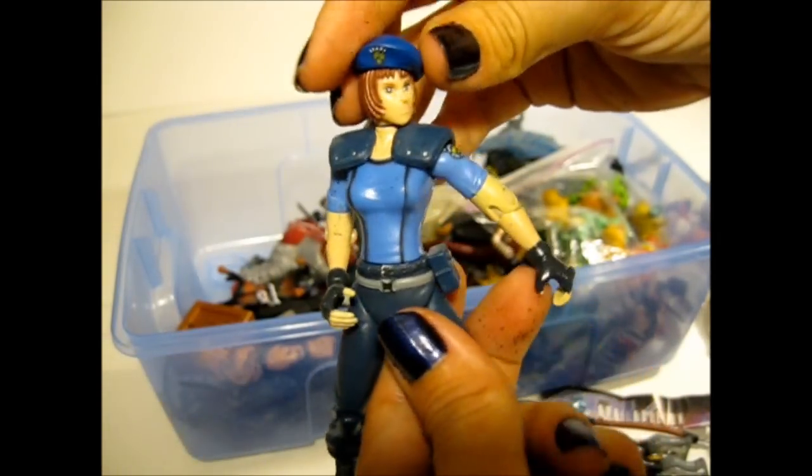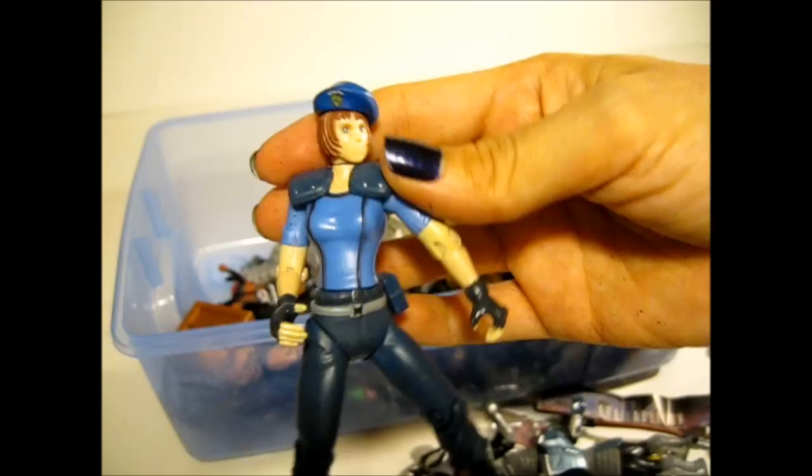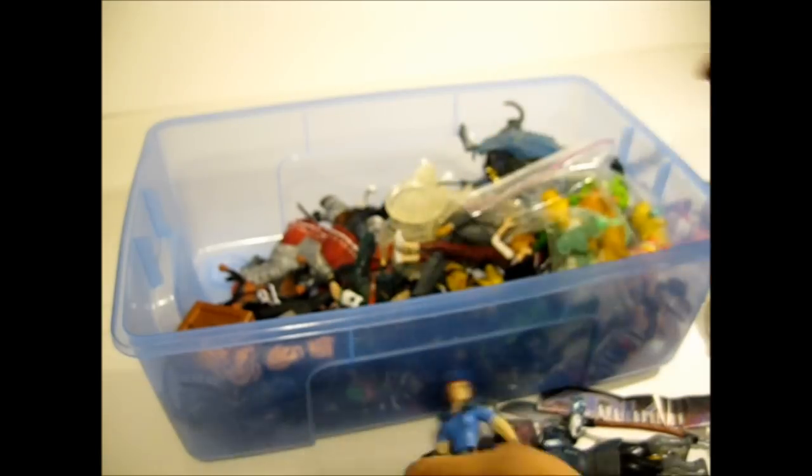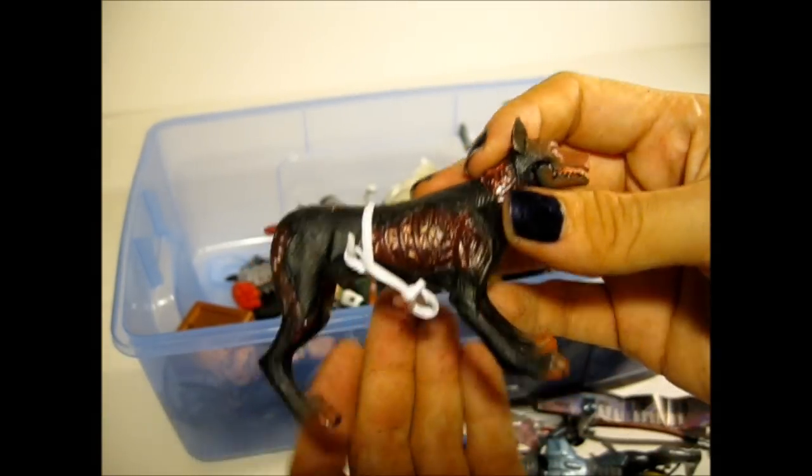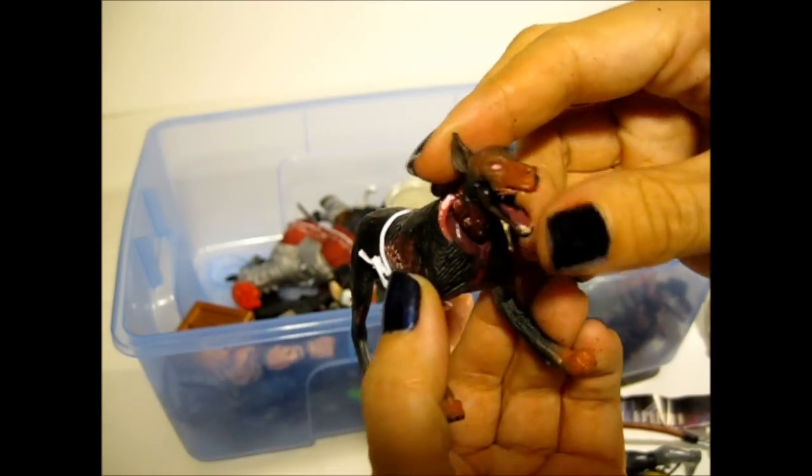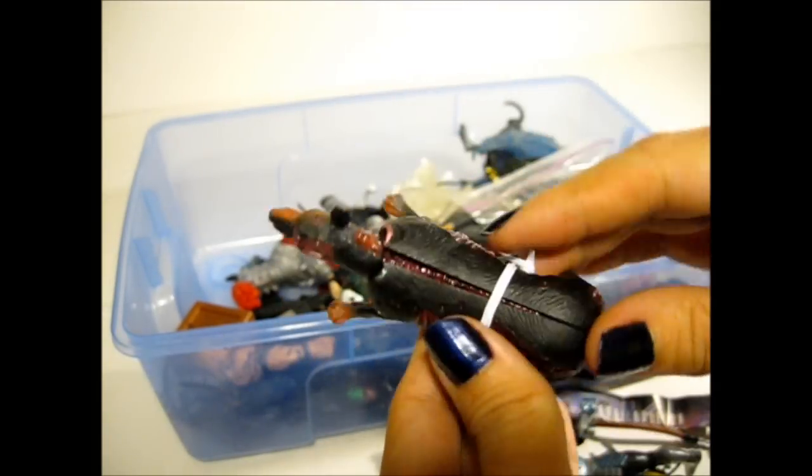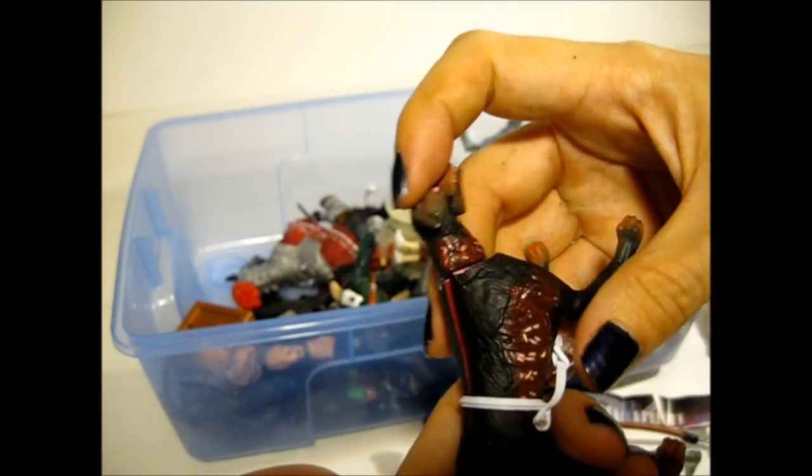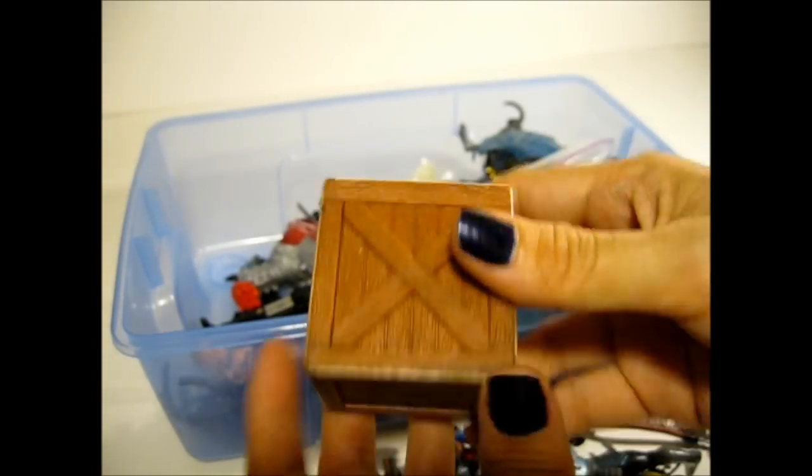I think this is a Resident Evil police girl character. Her hat is kind of sticky. Oh, here's a Resident Evil dog. One of those toys left some black stuff on my hand. Okay, so this is a... Oh, his mouth opens. Little doggy. I think this explodes if you do something. I guess that's why this twist tie is on it.